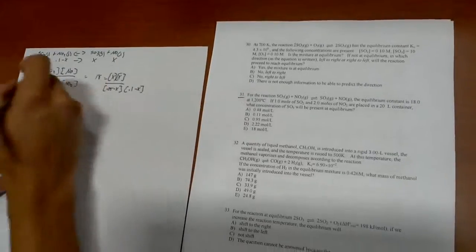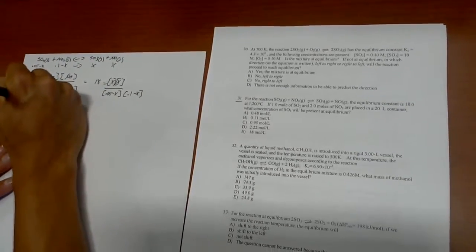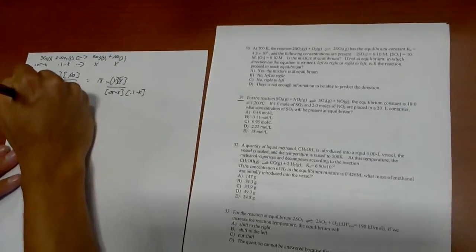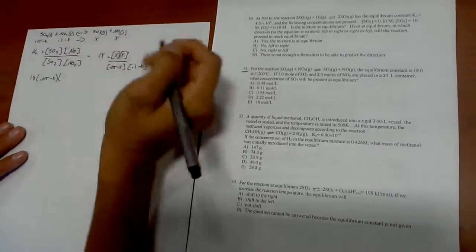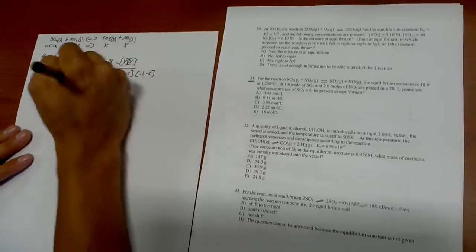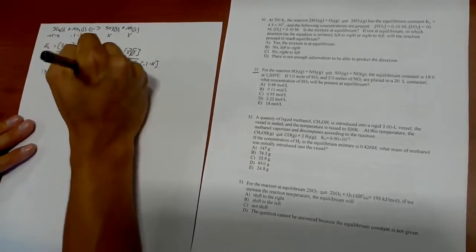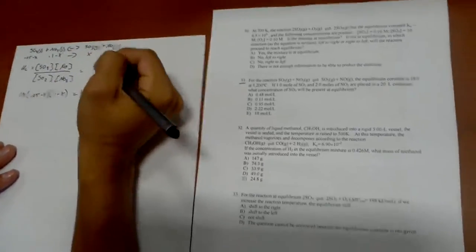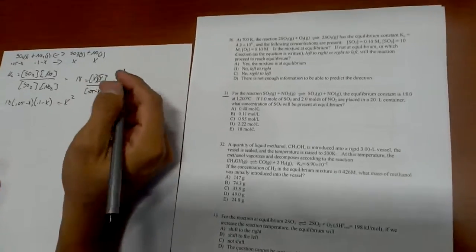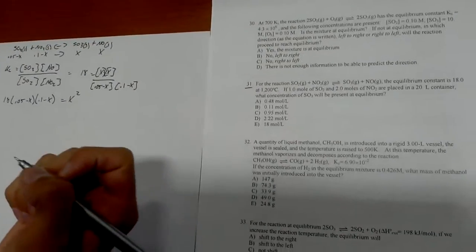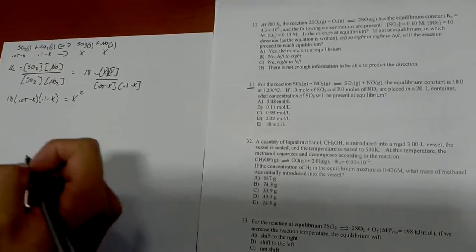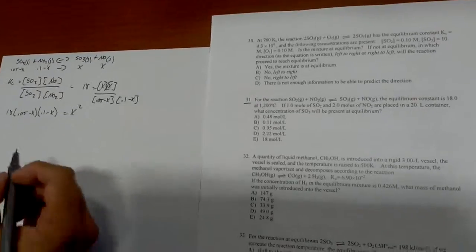So now if we solve for the x's we're going to get 18 equals 0.05 minus x times 0.1 minus x equals x squared, because these two x's would combine.